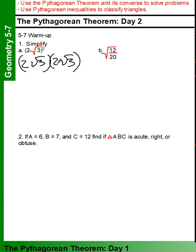Okay, well, 2 times 2 is 4. Root 3 times root 3 is 3. Well, that's just 12.